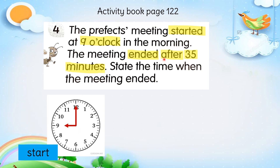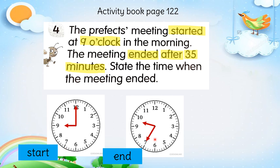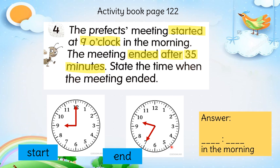And the meeting ended after 35 minutes — selepas 35 minit. Jadi jarum panjang ini akan bergerak 5, 10, 15, 20, 25, 30 and 35. Dia sampai di sini — jarum panjang akan berhenti di sini. Ini adalah end time — masa tamat untuk mesyuarat. So sekarang tuliskan jawapan ini sebagai jawapannya. Pukul berapa? Depan ini jam — hour. Belakang sini minute. Lepas tu tuliskan in the morning, sebab dalam soalan ni kita tahu dia pada waktu pagi — jadi kita tuliskan in the morning di hujung.